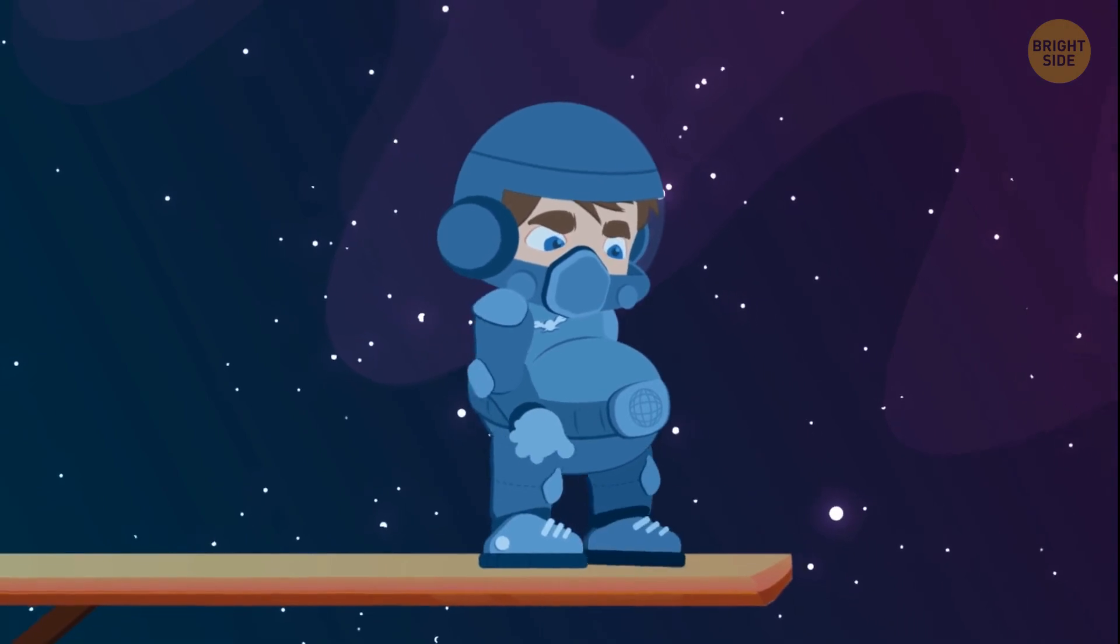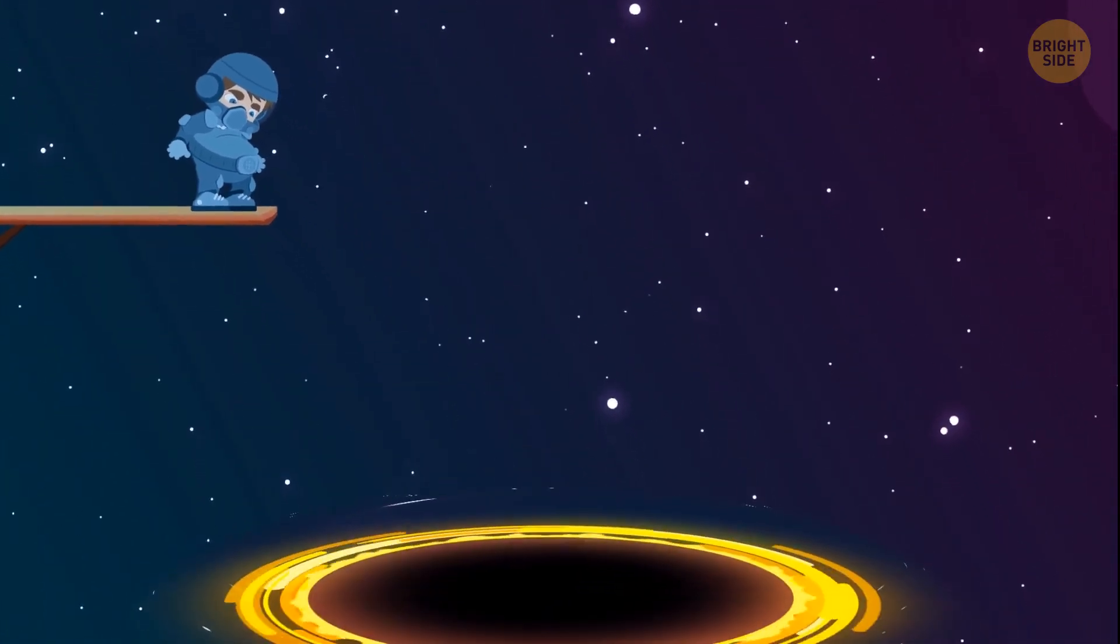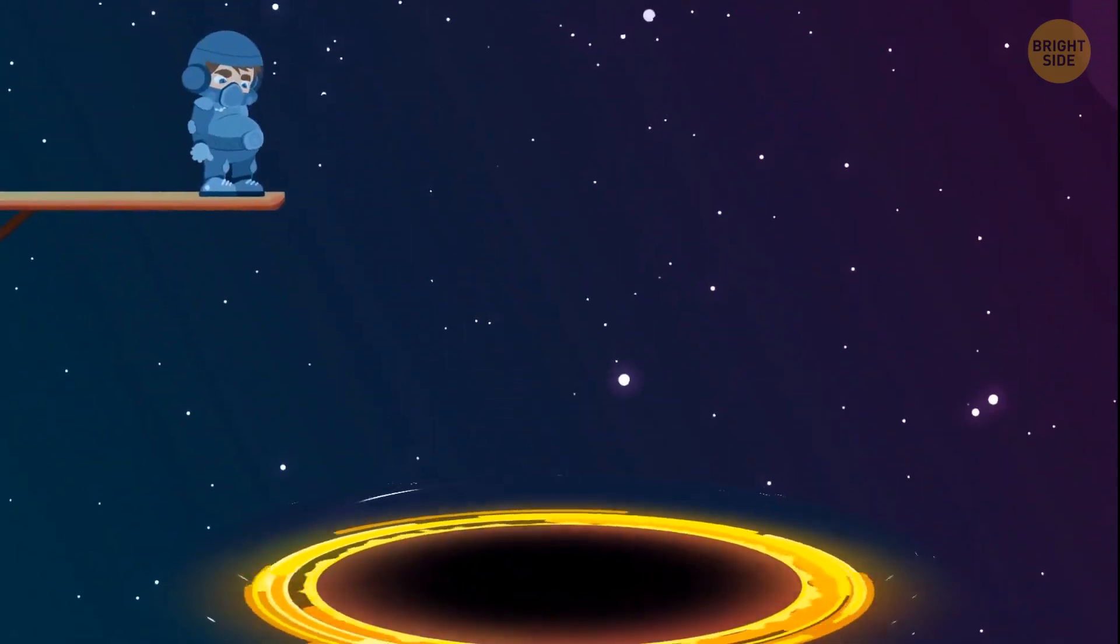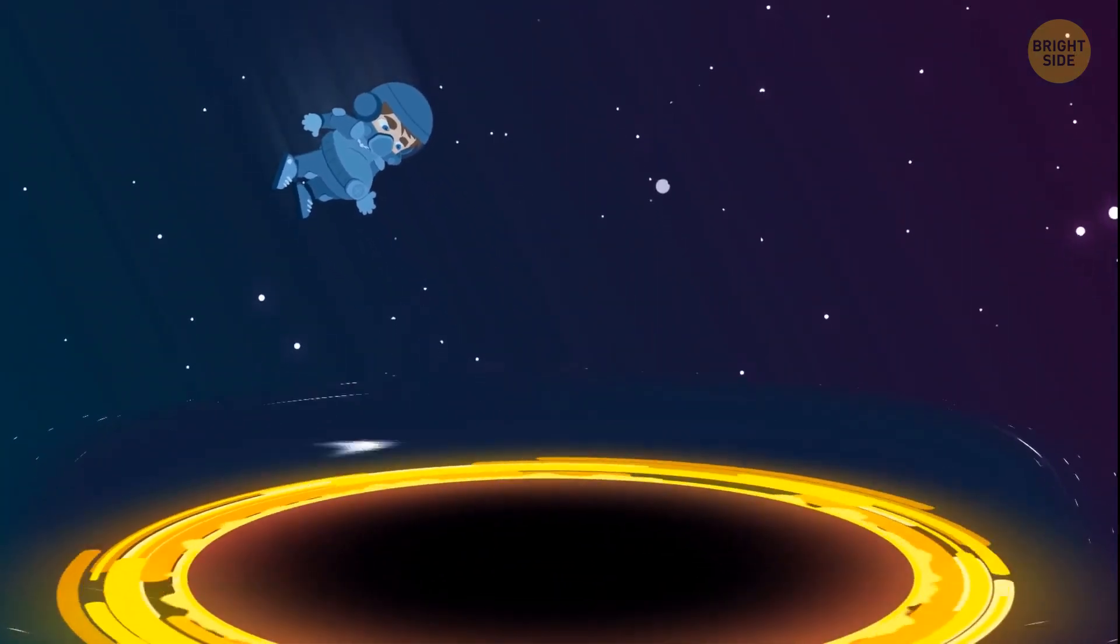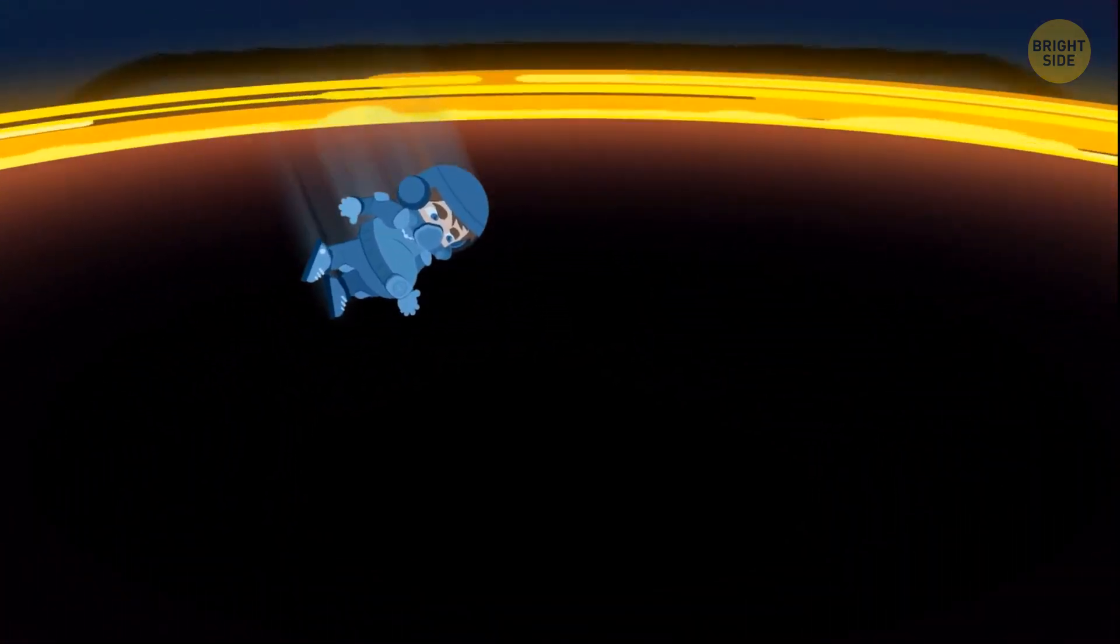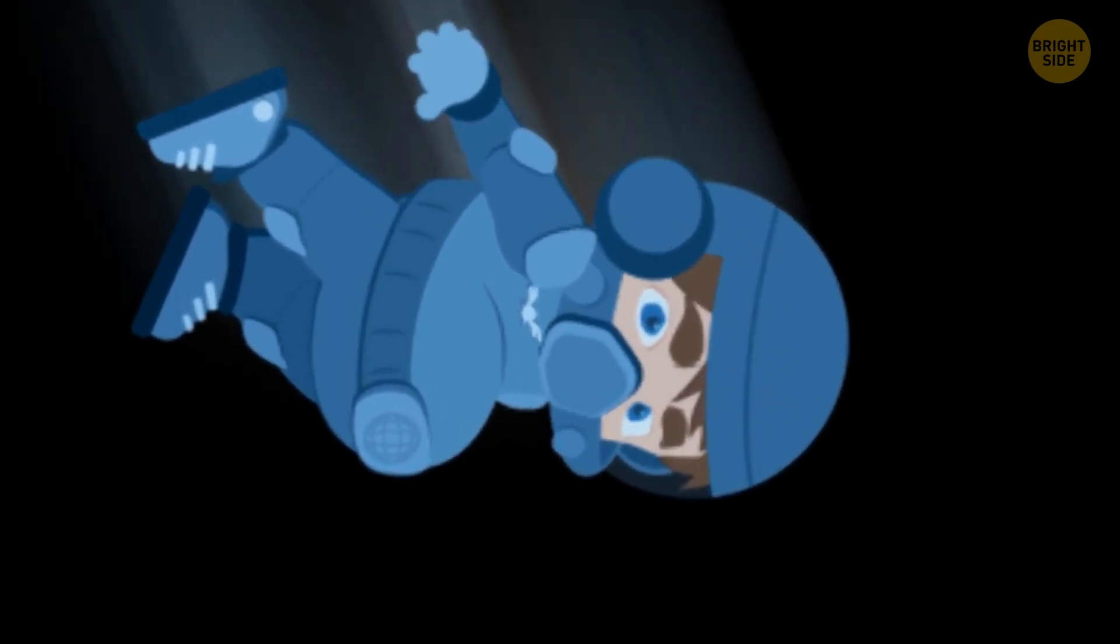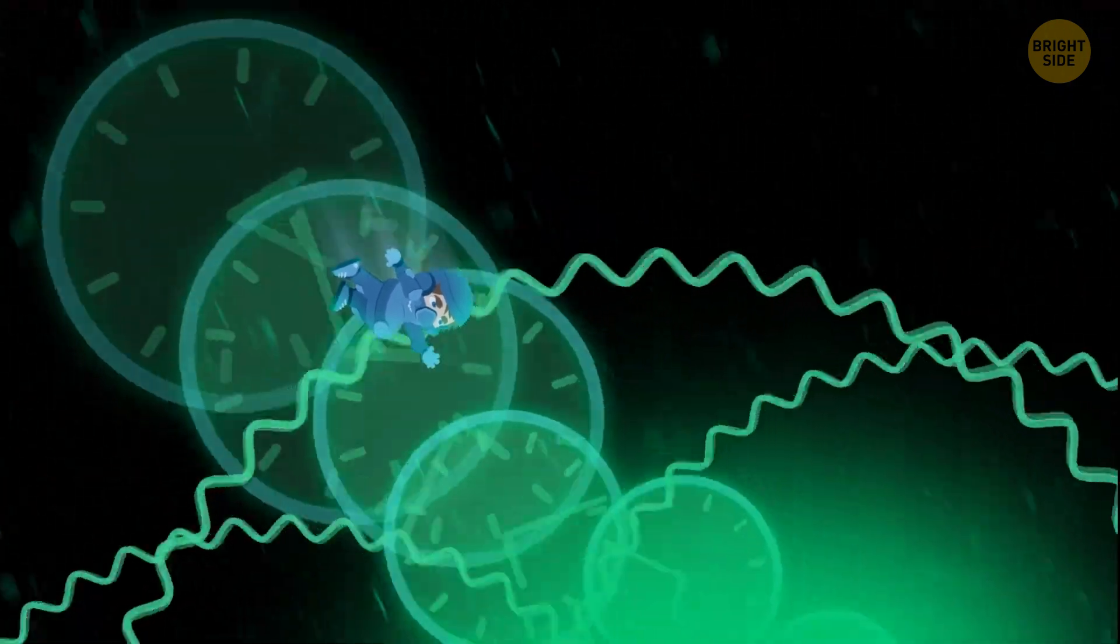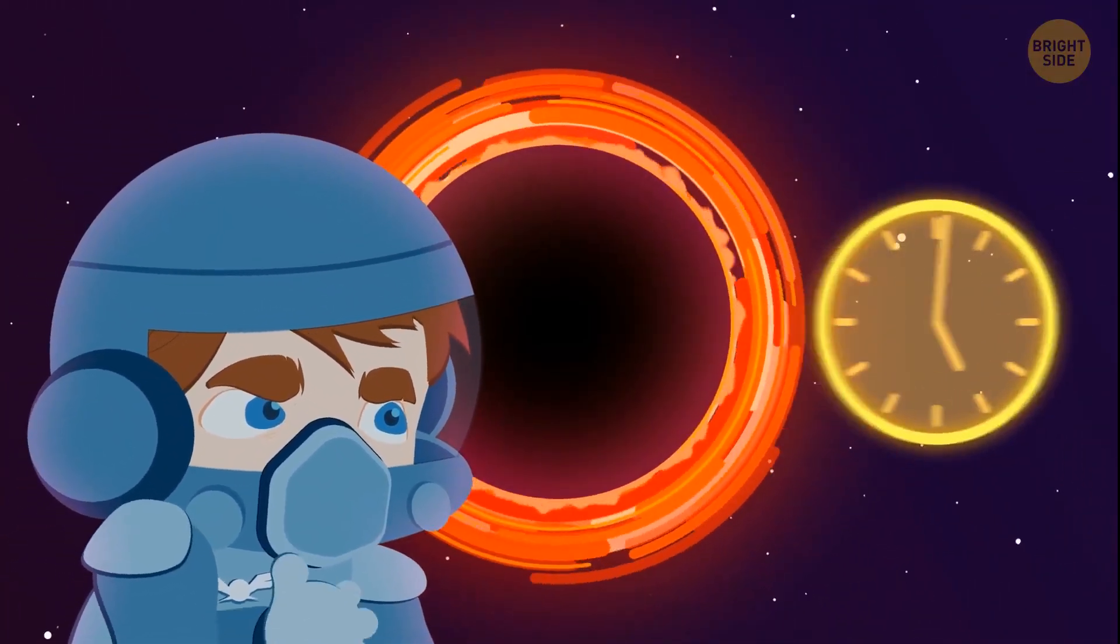So you're standing on a diving board in the middle of an open space. You look down, but that's not a pool, it's a giant black hole. Well, what the heck. You start swinging and then you jump. The gravity of the black hole grabs you and you pick up speed. Just a little more and you'll enter the dark abyss. But you're not afraid. You're sure you can survive the fall into the black hole. Besides, you have a clear goal: to travel through time. But first, let's figure out how it works and why time stops near a black hole.